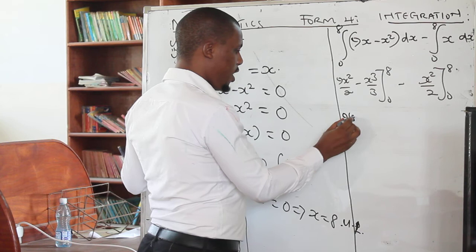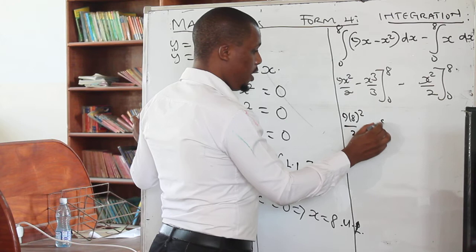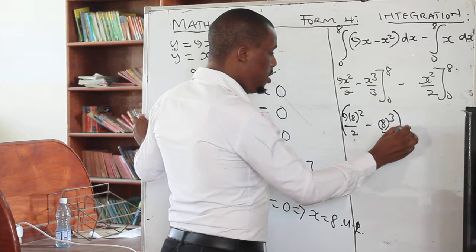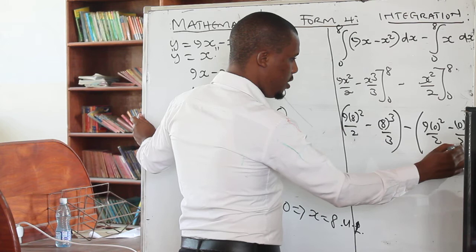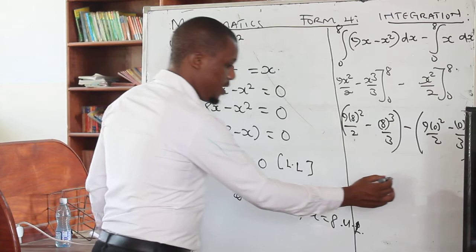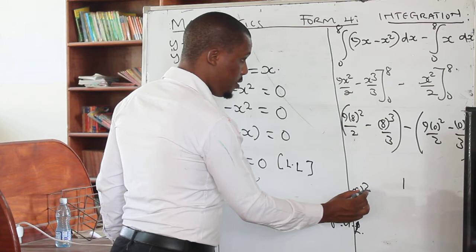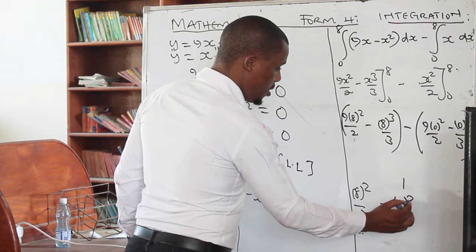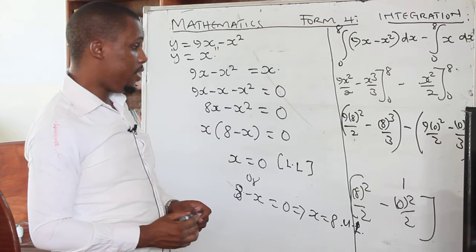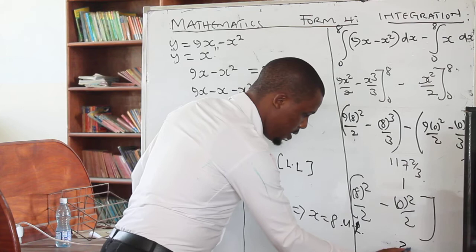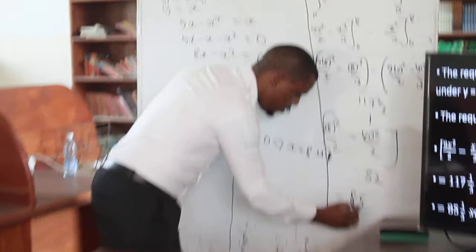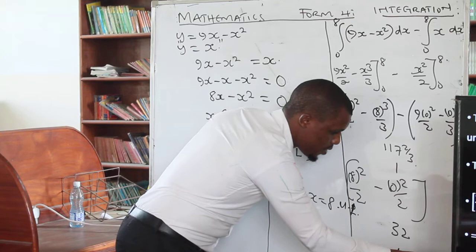Substituting x = 8: we get 9(8²)/2 − 8³/3, then subtract the result for x = 0, which gives zero. For the second integral, we get 8²/2 − 0²/2. Computing from the calculator, the first part gives 117⅓ and the second gives 32. Subtracting the two, the final answer is 85⅓.